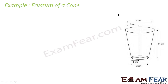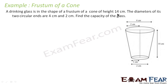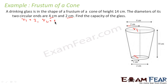Let's take some examples of direct application of formulas. Here we have a drinking glass in the form of a frustum. The height is 14 centimeters and the diameters of its ends are 4 centimeters and 2 centimeters. So r1 = 2, r2 = 1, and h = 14. We have to find the volume.